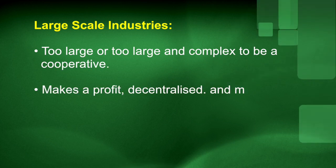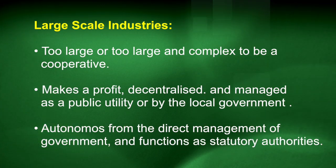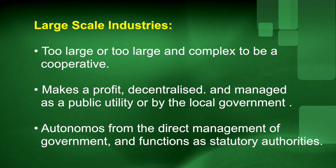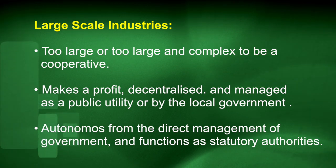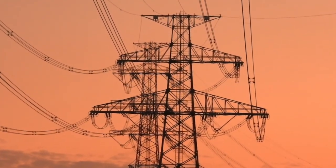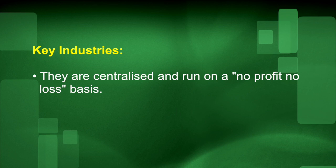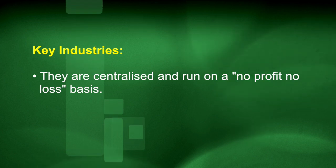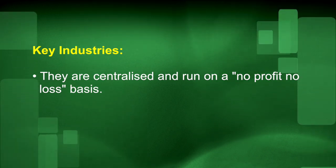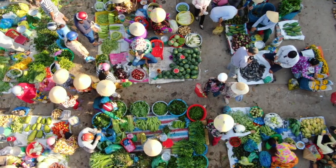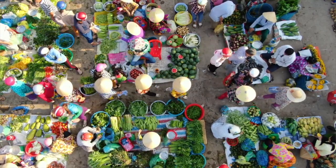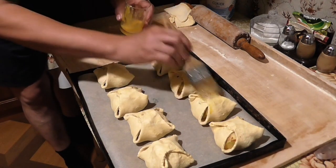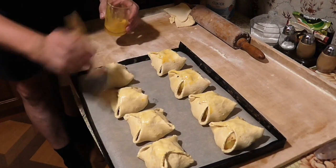Large scale public industries are generally structured to make a profit, decentralized and managed as public utilities by the immediate or local government. However, they are always structured as autonomous from the direct management of the government of the day and function as statutory authorities. Some of these large scale industries should be considered key industries. Key industries should operate on the principle of no profit, no loss and be centralized rather than decentralized. Examples include pharmaceuticals, raw materials and large scale energy suppliers. Cooperatives have the potential to employ many more people than medium and large capitalist businesses. In a Proutist system, the active support of both small scale business and cooperatives is a major factor in guaranteeing full employment.